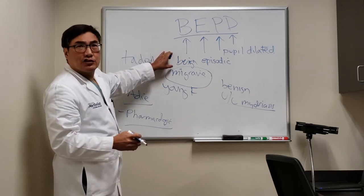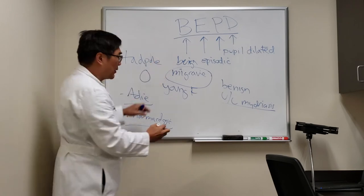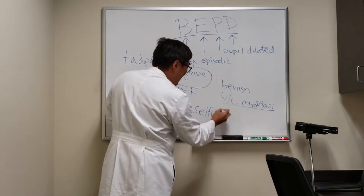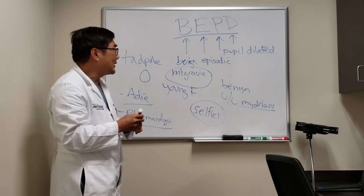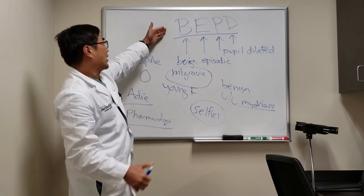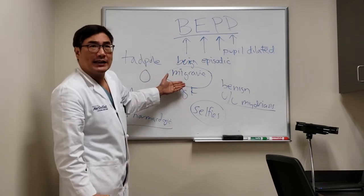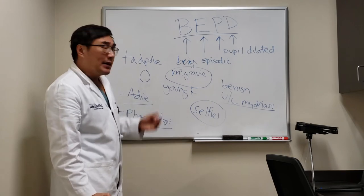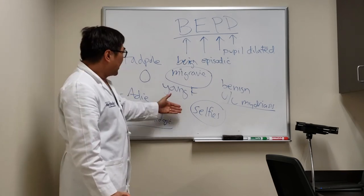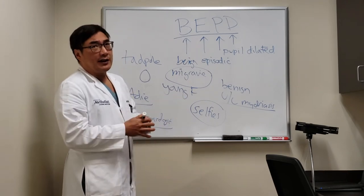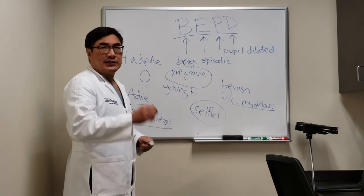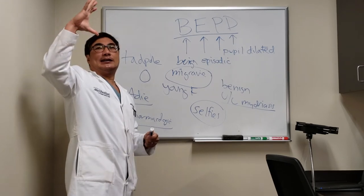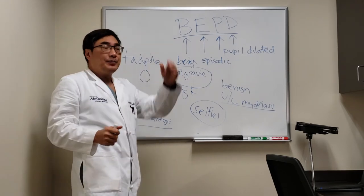What I have the patient do is take pictures of it — selfies — so we can see what it looks like, because many times they have the complaint but they don't actually have the finding when you see them in the office and it's a normal eye exam. The description alone is usually good enough, but we'd love to see selfies showing the normal pupil and then the benignly dilated one.